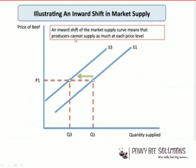Looking at an example with price of beef and quantity supplied — price is on one axis and quantity supplied on the other. There is an inward shift of the market supply curve, meaning producers cannot supply as much. If there is a decrease in supply, it's likely to be an inward shift — the supply curve moves to the left from its position, from S1 to S3.